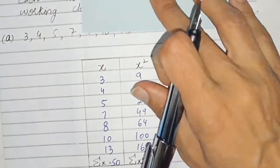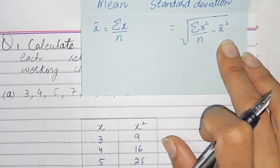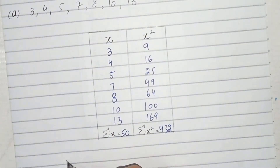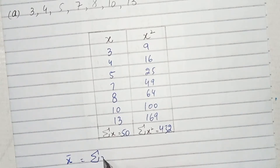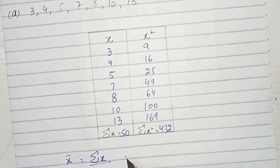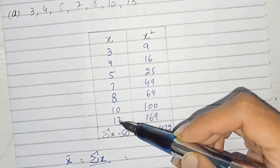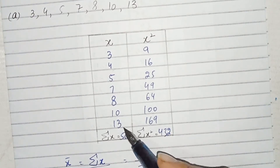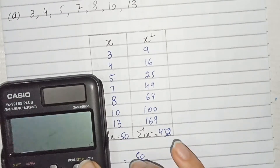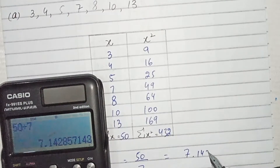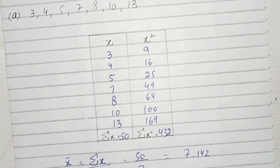Now we apply the formula for standard deviation. First we find the mean. Mean = sigma x over n. The total number of values is 7 and the sum is 50, so mean = 50 divided by 7 = 7.142.